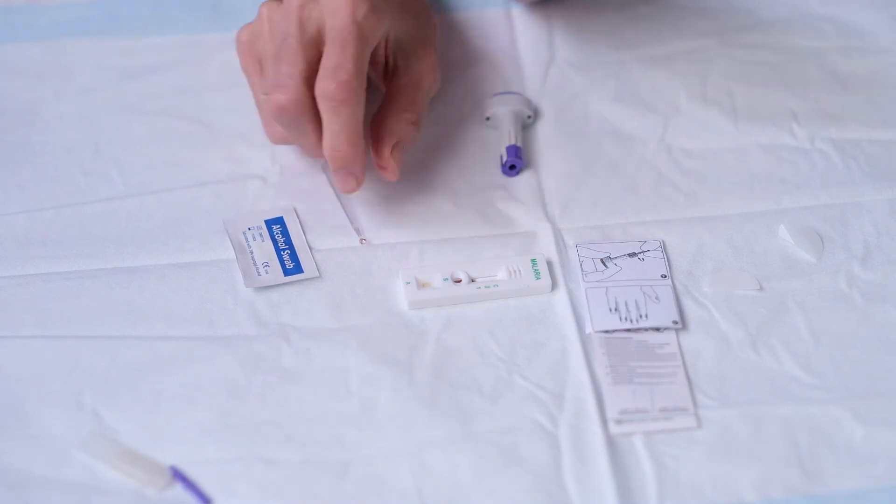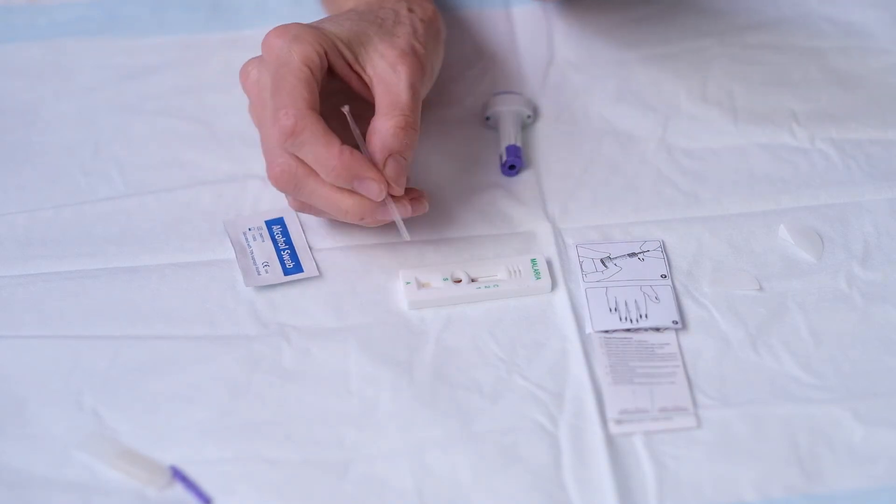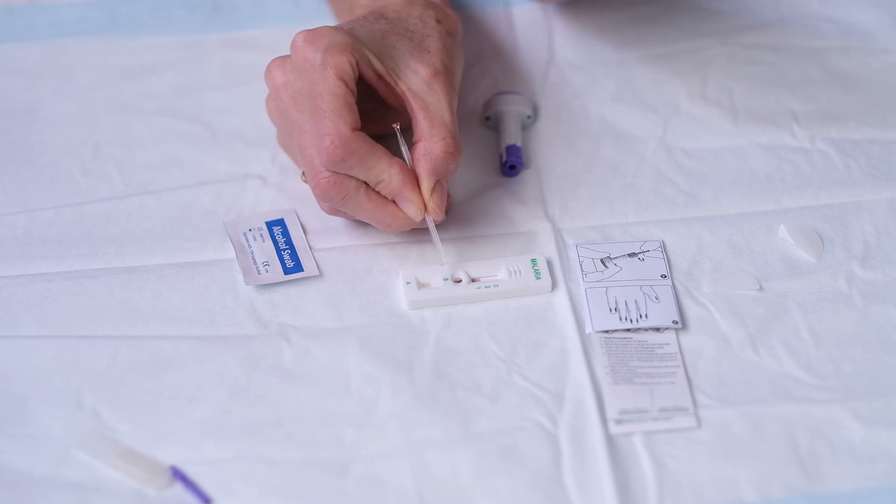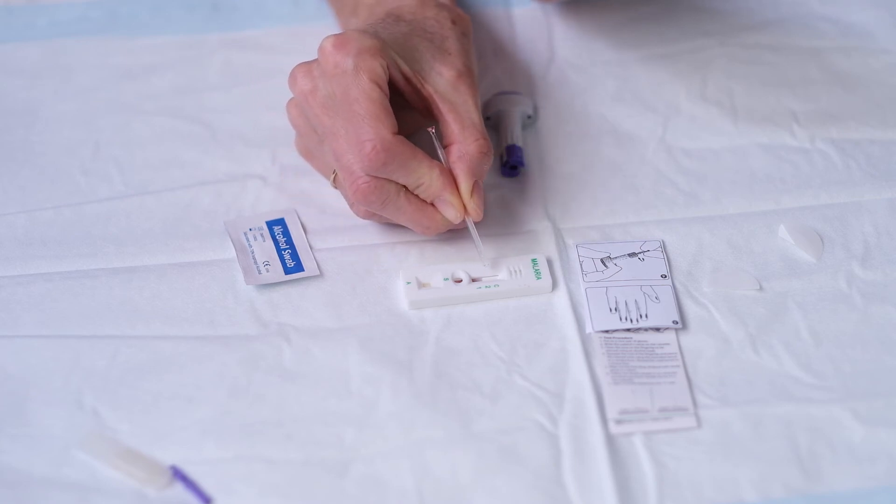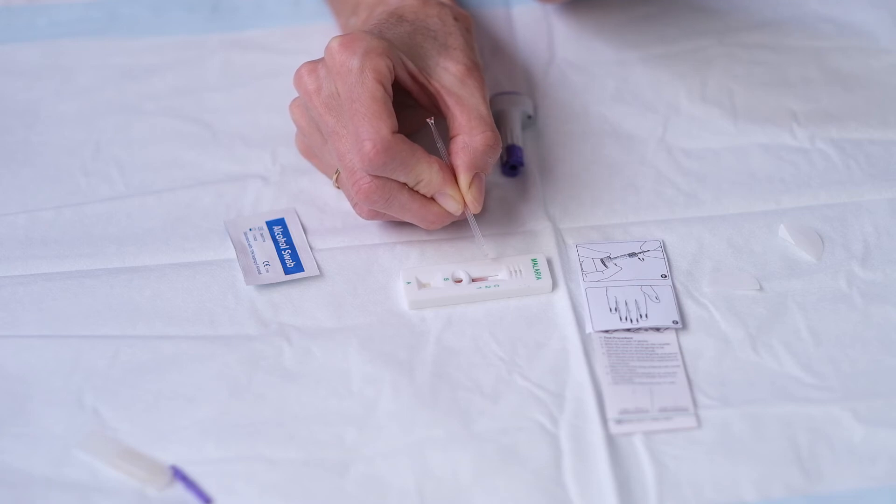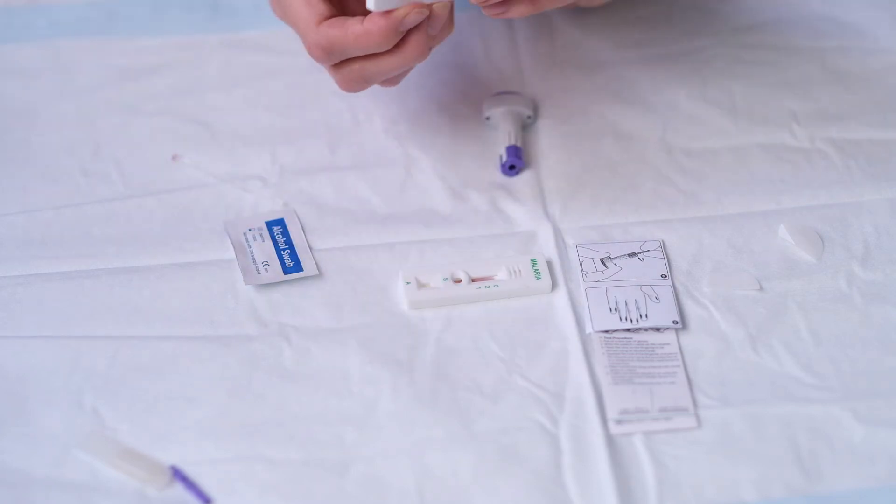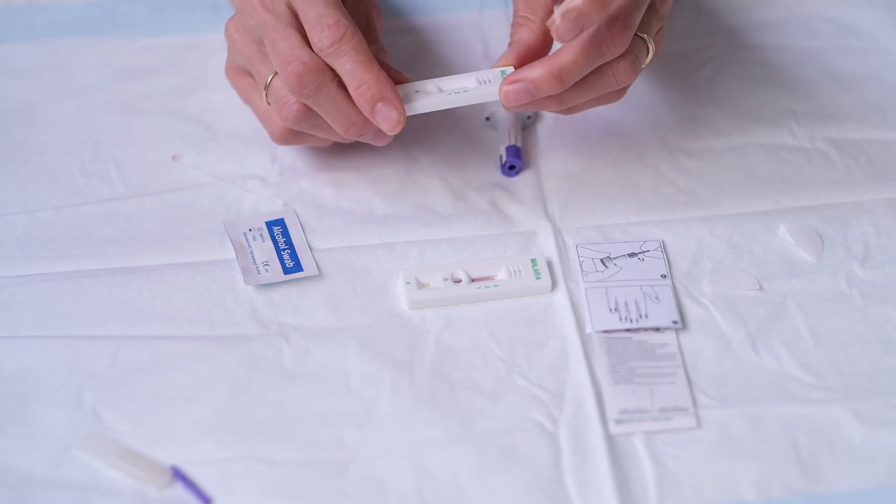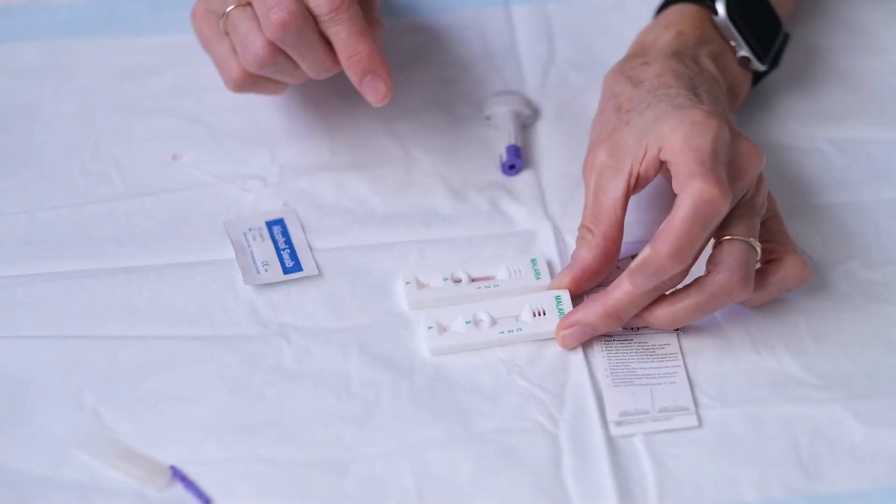And what will happen is that the solution will run past the blood up through the card and it will tell you by small bands on the cassette whether or not you have malaria. C is the control band will show that the test has been done correctly and this is a test that we did earlier.